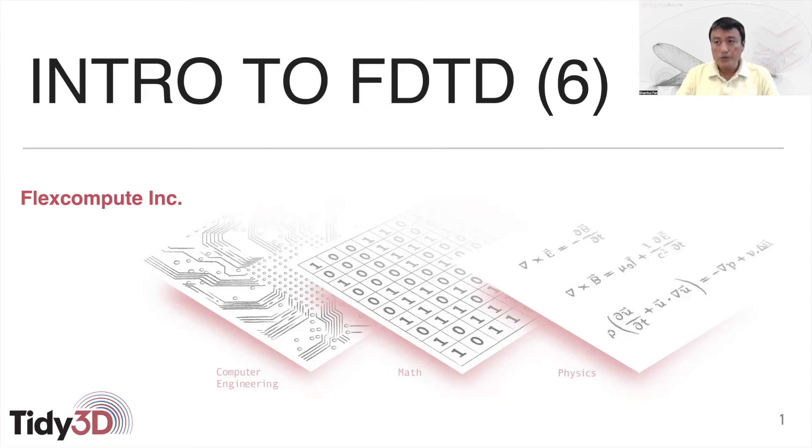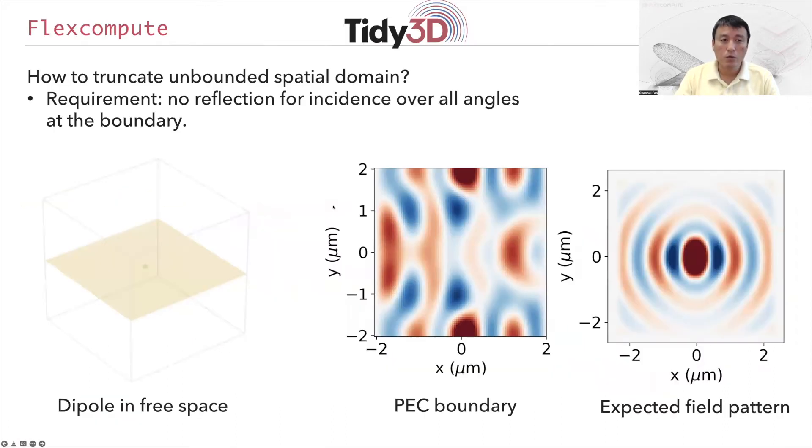Today we will continue to talk about some of the issues related to FDTD or the finite difference time domain method. I'm Shanhui Fan from FlexCompute. In particular, we will talk about the issue associated with perfectly matched layer boundary condition.